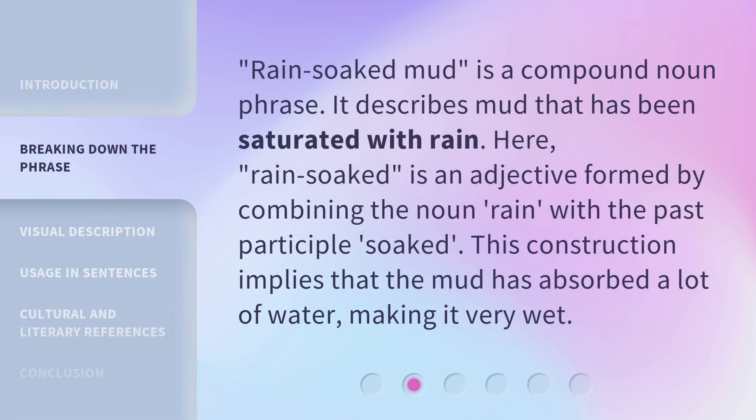Rain-Soaked Mud is a compound noun phrase. It describes mud that has been saturated with rain. Here, Rain-Soaked is an adjective formed by combining the noun rain with the past participle soaked. This construction implies that the mud has absorbed a lot of water, making it very wet.